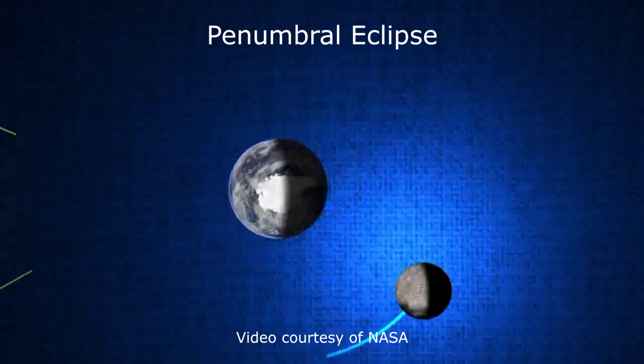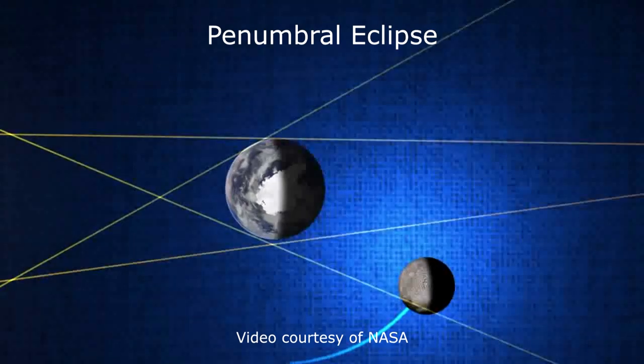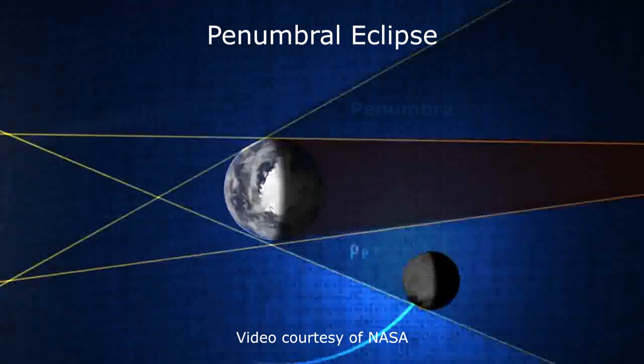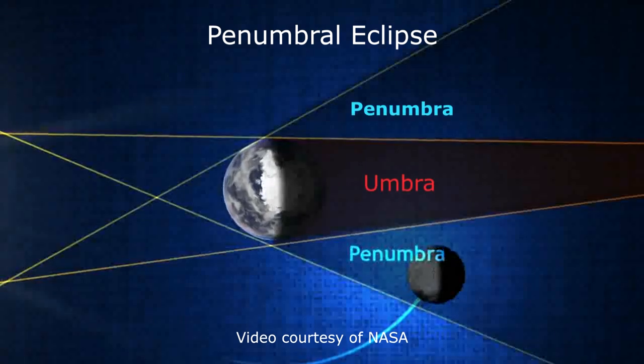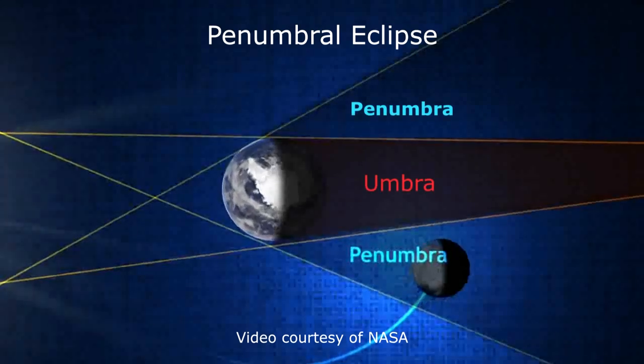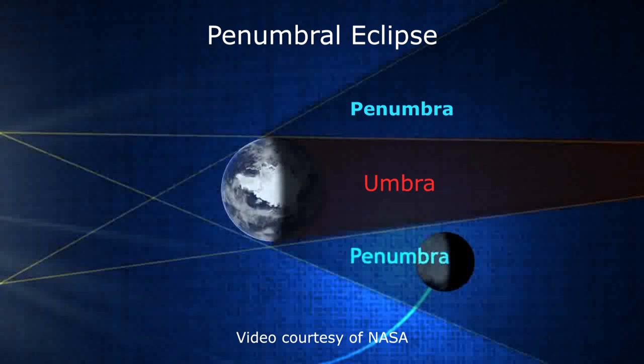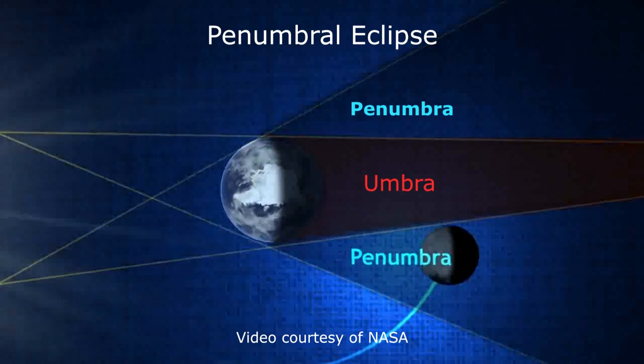Then we get something called a penumbral eclipse, which means that instead of that darkest part of the shadow completely blocking the moon and giving that nice dark blood red color, it's only partially in shadow. So a portion of the shadow of the earth blocks that, but most of it's still in light. It's not fully in light like most times that it goes around, but it is partially in that.